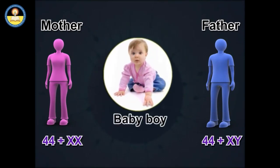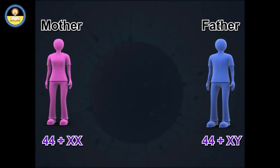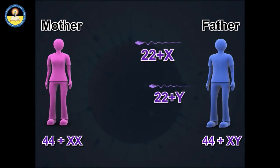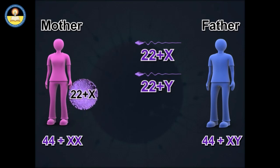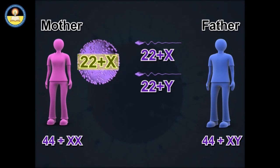A single Y chromosome is sufficient to produce maleness while its absence is necessary for femaleness. In case of humans, a male determines the sex because males produce two types of sperms. One type carries an X chromosome and the other type carries a Y chromosome, while females produce all eggs containing only the X chromosome.